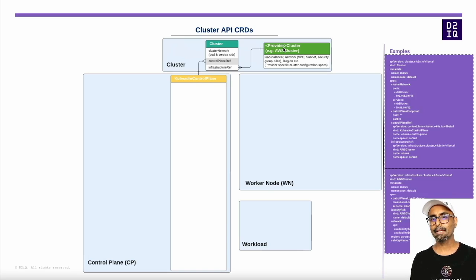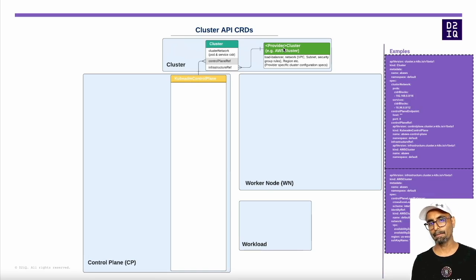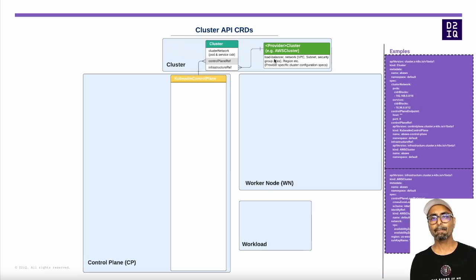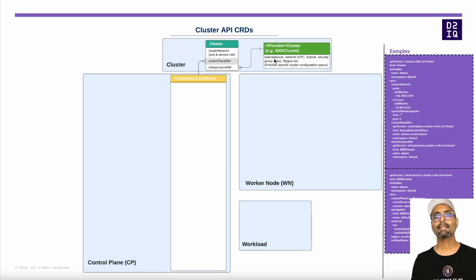The provider cluster resource name depends on the infrastructure provider being used. For example, for AWS it is called AWS cluster; for Azure it's called Azure cluster and so on. This resource contains the information or specs for configurations like load balancers, VPCs, subnets, security groups, rules, regions, etc. The provider-specific controller watches this resource and handles standing up the core virtual infrastructure declared here.